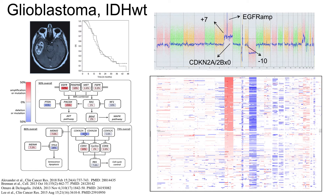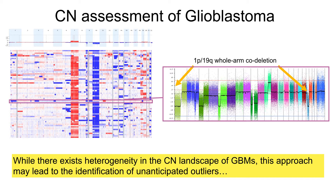While many glioblastomas have this characteristic copy number signature, it is important to note that many do not fall neatly into that signature. It is important to really rely on the histologic impression when making this diagnosis given the diversity of alterations often present in this tumor. By contrast, many tumor types have an overlapping array of morphologies, and it is not infrequent that we run across tumors that are misclassified initially as glioblastoma based on their high-grade features. Routine profiling with chromosomal microarray easily picks out those that don't fall into this category, such as this anaplastic oligodendroglioma.